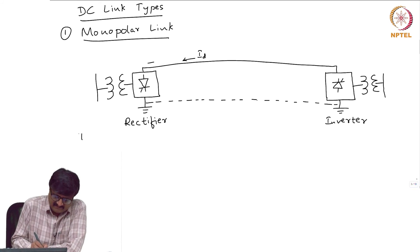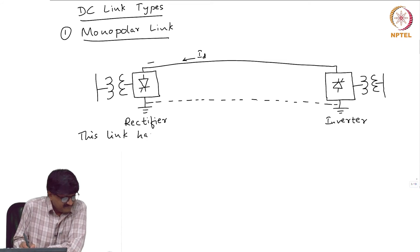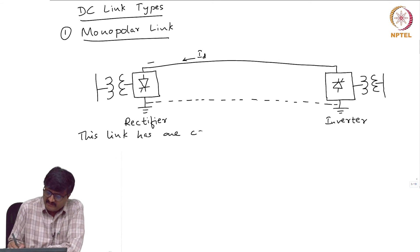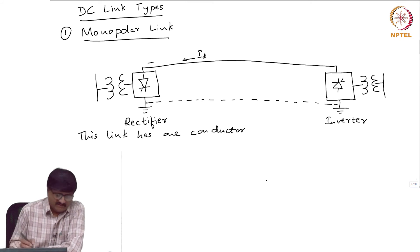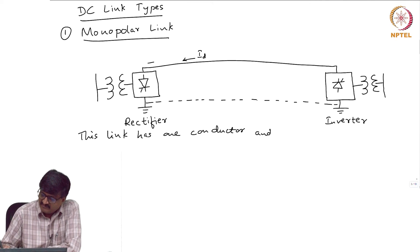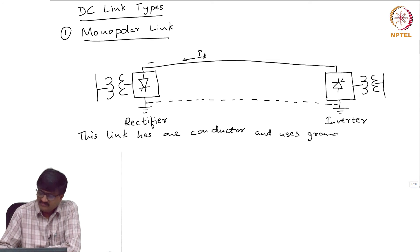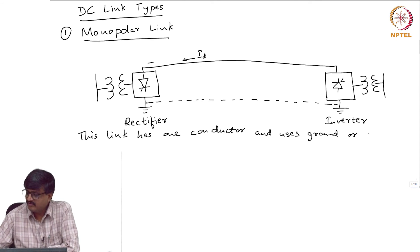So this link has only one conductor. Just one conductor alone will not serve the purpose of current flow. So I need to close the path. So it uses ground or water return, ground return or water return.